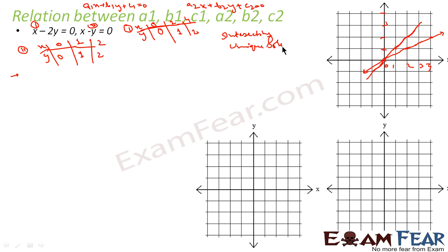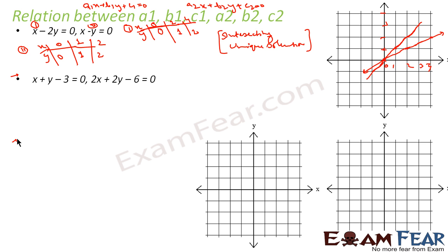Please make a note of this — we will use this to derive the relationship between a1/a2, b1/b2, and c1/c2. Now let's take the second scenario: x plus y minus 3 equals 0 and 2x plus 2y minus 6 equals 0. For this also, let's try to plot the graph. I'm setting up the x, y table for the first equation.